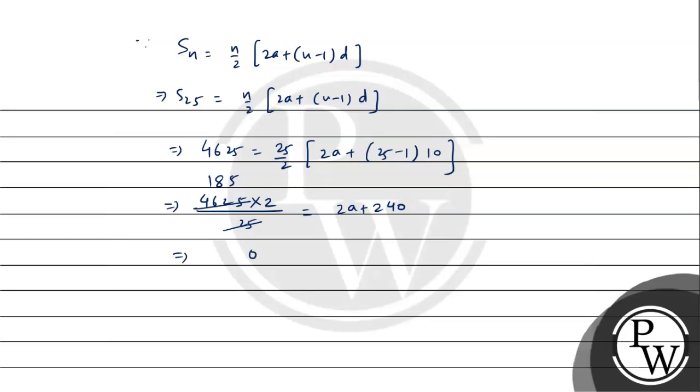So 125, then 185 times 2: 2 into 5 is 10 carry 1, 2 into 8 is 16, 17 with carry, 2 into 1 is 2, carry 1, gives 370.